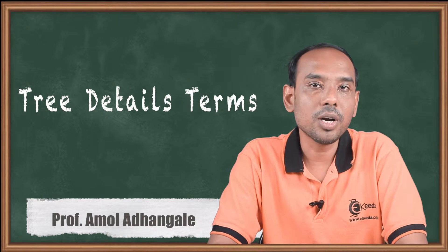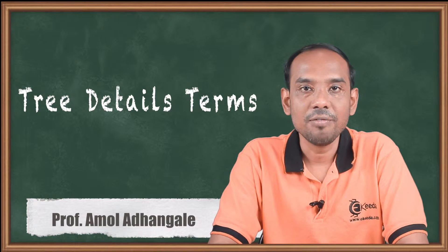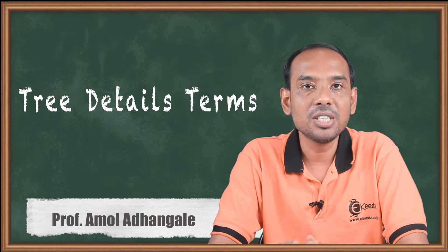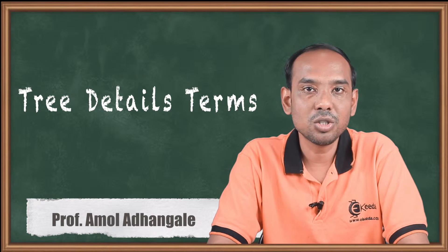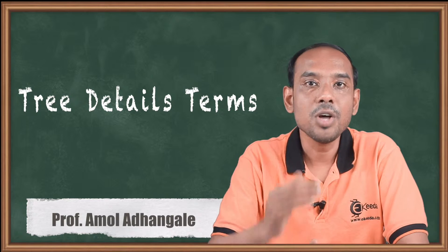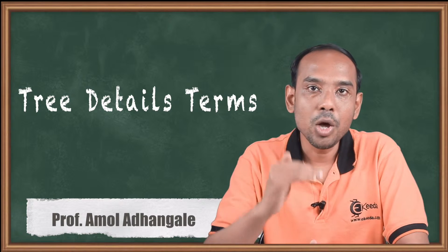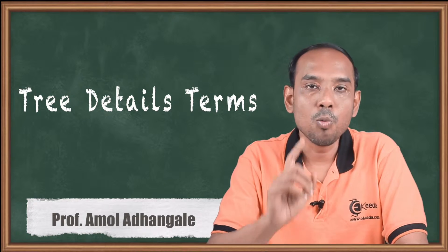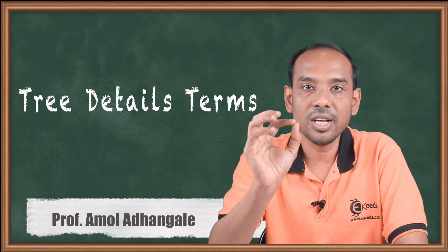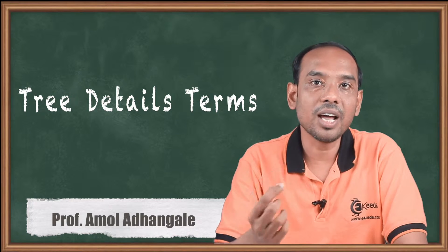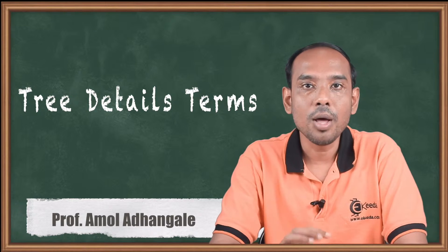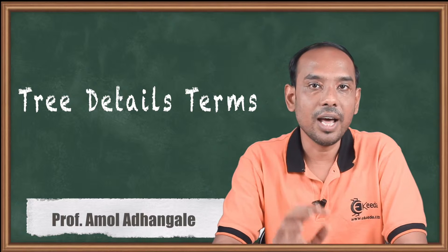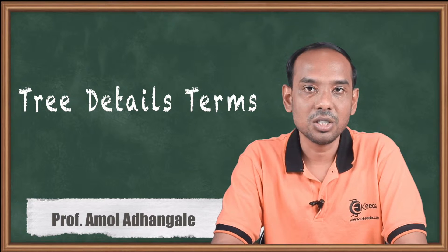Today we will look at the important terms of tree. We have already defined the tree. Tree is a non-linear data structure in which we have root and node kind of a structure. One node is considered as a root and all other nodes are connected to the root by directed or undirected edges.